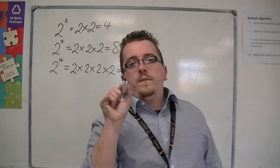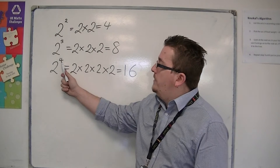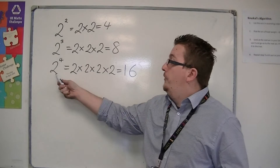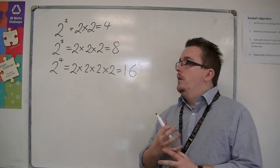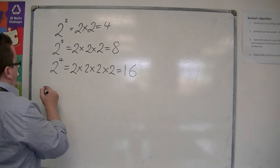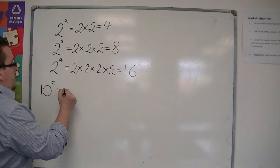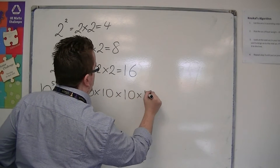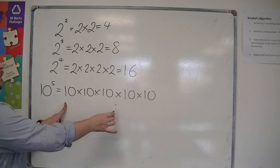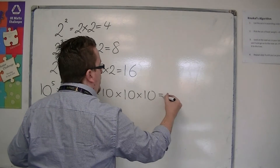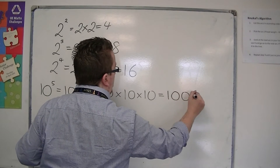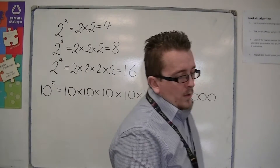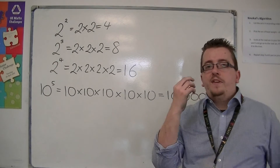So the number in the power — the index — tells you how many times you need to multiply the base number by itself. So if I wrote down 10 to the 5, this is 10 times 10 times 10 times 10 times 10. It's telling me to multiply 10 by itself 5 times, which is 1 and 5 zeros — so 100,000. That's how the index is used.